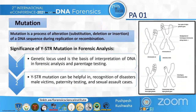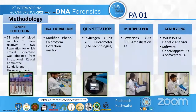Now coming to mutation. It is a process of change in DNA sequence during replication or recombination. Any alteration during replication or recombination can be termed as mutation — it can be substitution, deletion, insertion, or anything. The main importance of mutation in forensics is that it can be helpful in differentiating male blood relatives.